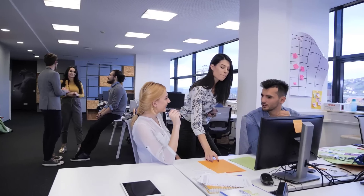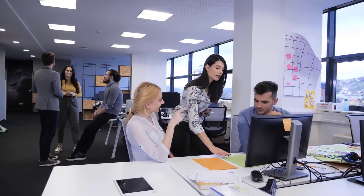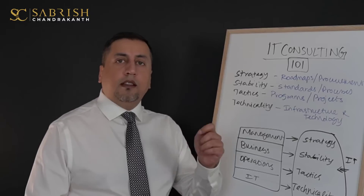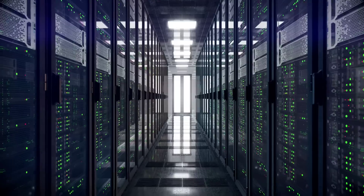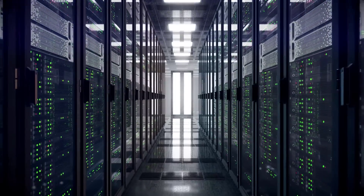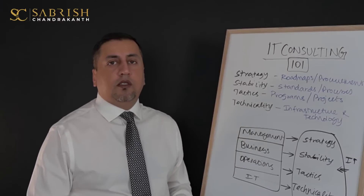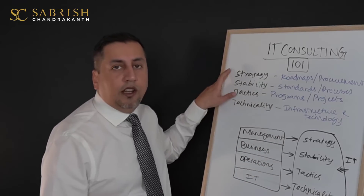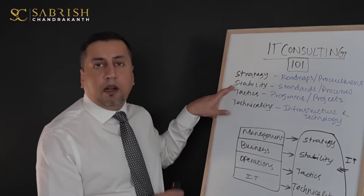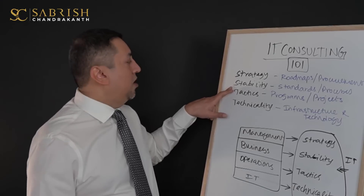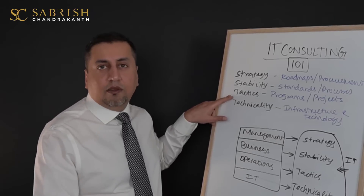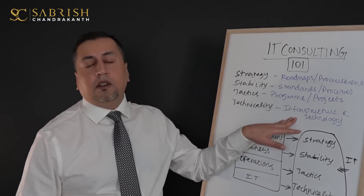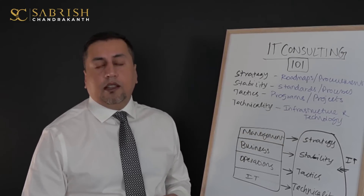When you're working on tactics, you're mostly working on ways to improve IT systems through the help of programs and projects, which are initiatives that IT departments undertake in order to enhance or implement new solutions in their IT portfolio. When you're focusing on the technicality of IT, you're mostly interested in enhancing or standardizing the IT infrastructure and the technology components of the organization. So these are the four major areas in which IT consulting can mainly specialize: at the strategy level you're probably working as a management consultant; at the stability level, as a senior consultant working with different groups and departments; at the tactical level, as a project manager, analyst, or developer; and at the technicality level, specializing as a developer, administrator, or architect.